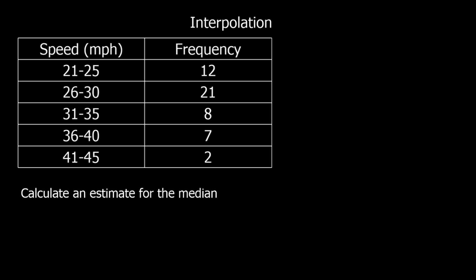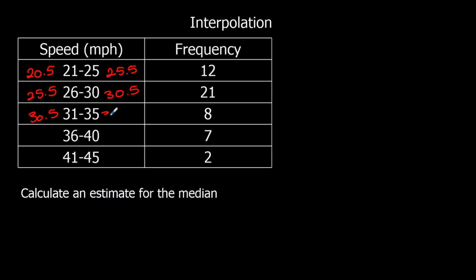Here we've got speeds in miles per hour, and you'll notice that there are gaps in between our groups. We've got a group of 21 to 25, then 26 to 30, then 31 to 35. With speeds being continuous data, we can't have any gap between them, so the upper class boundary for the first group has got to be the same as the lower class boundary for the second group. These speeds have been rounded to the nearest whole number, and we need to change them using the lower bound and upper bound to get a new set of groups with no gaps.